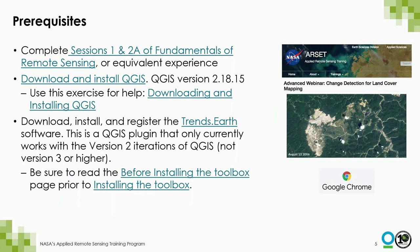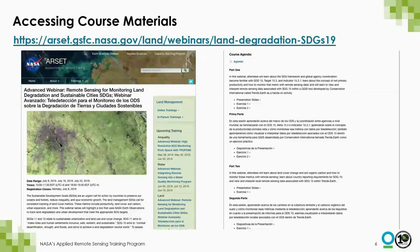The course prerequisites include a fundamentals of remote sensing, having the correct version of QGIS, and then downloading, installing, and registering the Trends.Earth software. This is the plugin within QGIS that we have been going through exercises with and really demoing throughout the course of this training. You can access all the course materials on the website shown here, including the PowerPoint presentations, the recording that will be available a few days after each session, the exercise documents, and the homework link.